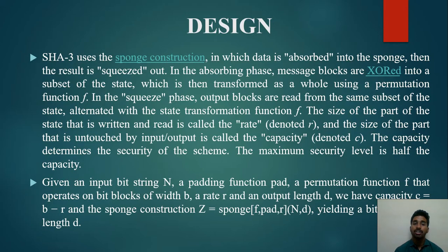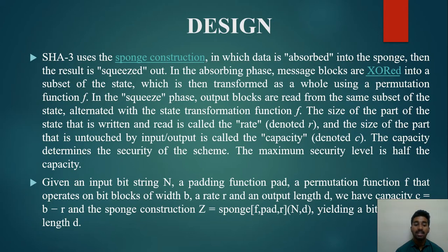SHA-3 uses the sponge construction, in which data is absorbed into the sponge and then the result is squeezed out. In cryptography, a sponge function or sponge construction is any of a class of algorithms with finite internal state that takes an input bit stream of any length and produces an output bit stream of any desired length. Sponge functions have both theoretical and practical use.